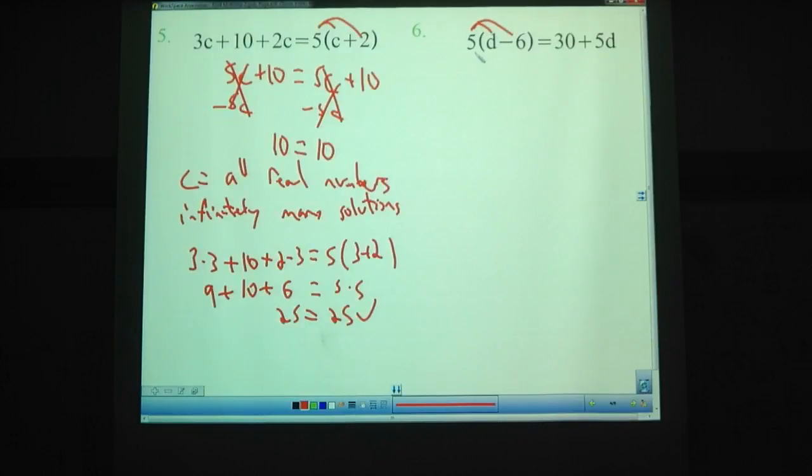Here, we need to distribute first. 5 times d is 5d. 5 times minus 6 is minus 30. So 5d minus 30 equals 30 plus 5d. Do we want to subtract off the 5d or the 5d? Let's actually subtract off the 5d. That gives us negative 30 equals 30. Those are not equal. So this isn't equal and that isn't equal. None of this was ever equal, so there's no solution. How do I have so much energy on this video today? I don't know. It's weird. Oh, it's because I was talking to my brother on the phone and he always gets me energized. He's a good guy. Full of all this energy.